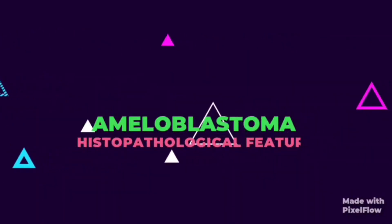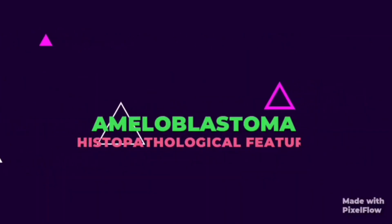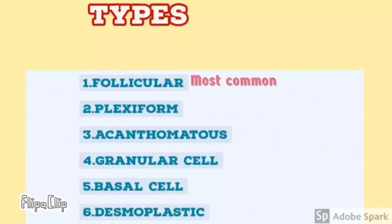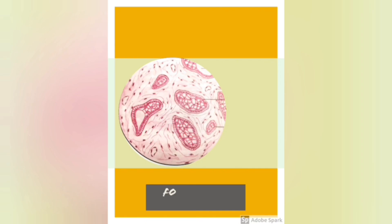Today we are going to discuss the histopathological features of ameloblastoma types: follicular, plexiform, acanthomatous, granular cell, basal cell, and desmoplastic. Follicular is the most common histological type of ameloblastoma. We will begin by discussing the follicular type.